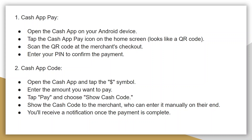Next, you can pay with a Cash App code. Open the Cash App and tap the dollar symbol, then enter the amount you want to pay. Tap Pay and choose Show Cash Code. After that, show the Cash Code to the merchant, who can enter it manually on their end. You will receive a notification once the payment is complete.